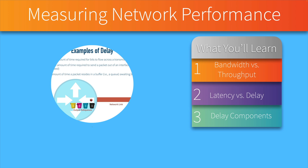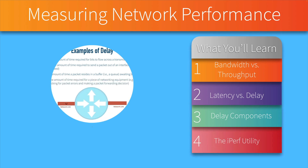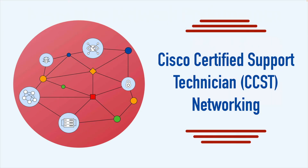Then in the second part of this video, we're going to take a look at a utility that allows us to actually measure throughput on our network. It's called iPerf. We're going to set this up — I'll show you how to configure a client, how to configure a server, and then we're going to measure our network throughput. Today's content is extracted from the CCST Networking course I'm currently working on. Later in this video, I'll tell you about how you can get access to the pre-release version of this course. Now let's get into our discussion of network performance.